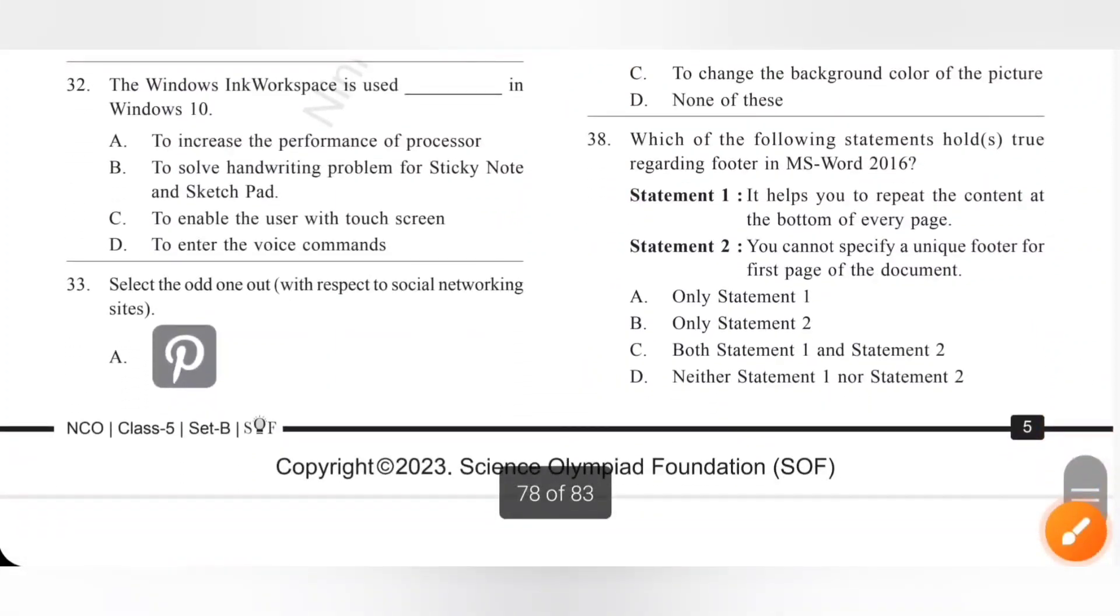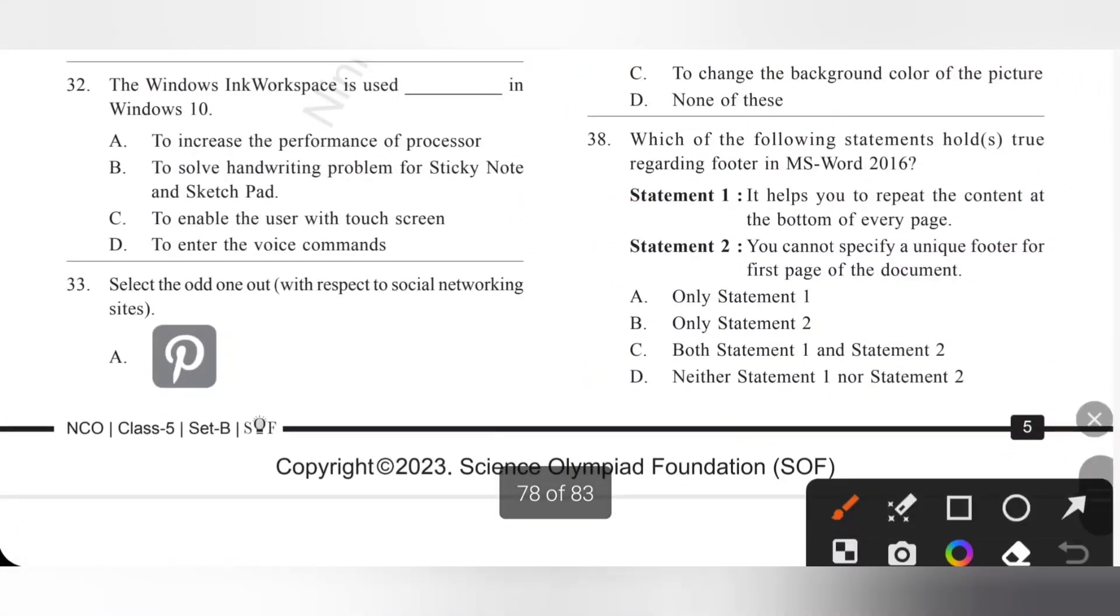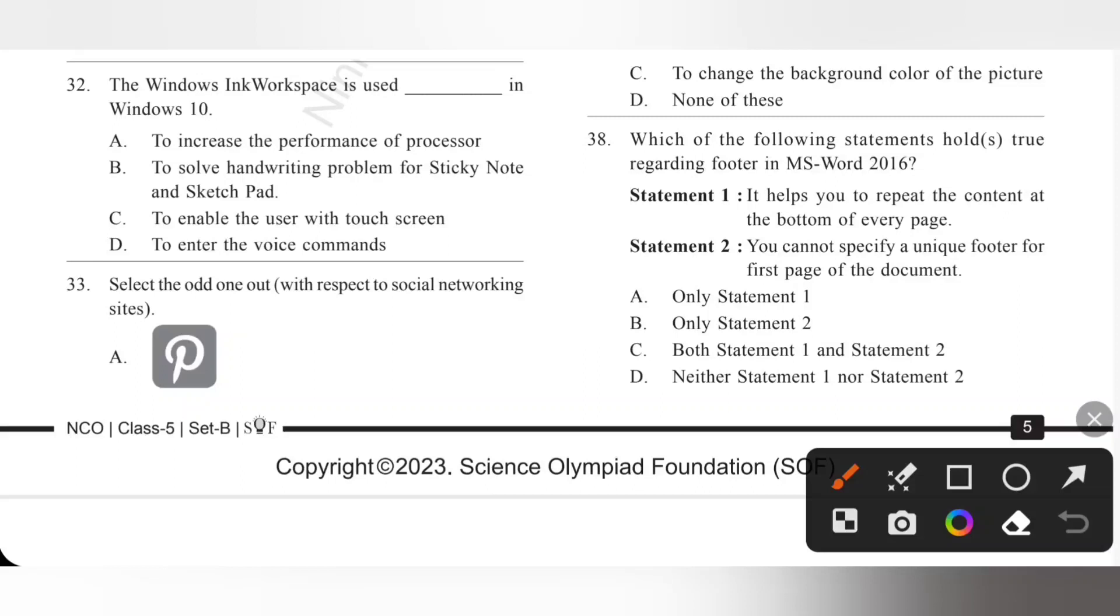Question 32: The Windows Ink workspace is used dash in Windows 10. The Windows Ink workspace, it adds digital pen support to Windows to write and draw on your computer screen. So, it is used to solve handwriting problem for sticky note and sketch pad. So, option B is the correct answer.